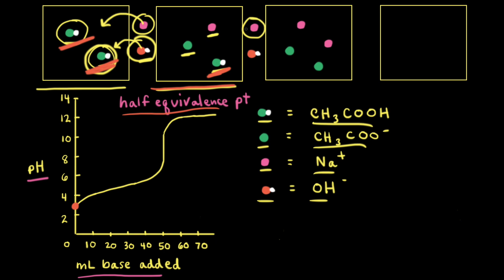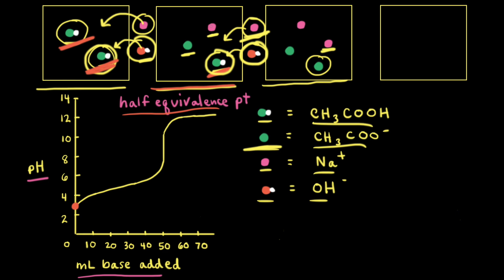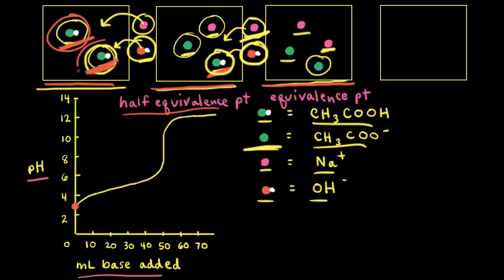Next, let's add enough sodium hydroxide to neutralize the other half of the acid. The acetic acid particle reacts with the hydroxide anion to form water and the acetate anion. We see the new acetate anion, the added sodium cation, and the species already present at the half equivalence point. All of the acid initially present has now been neutralized, so this third particulate diagram represents the equivalence point.